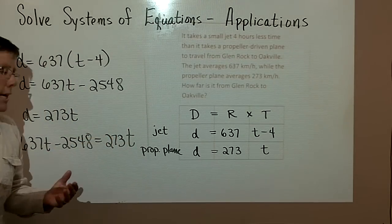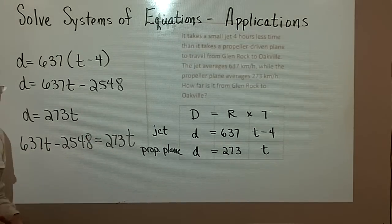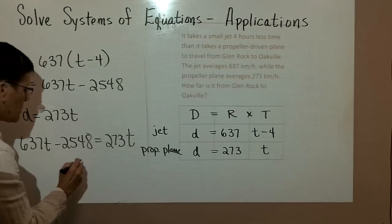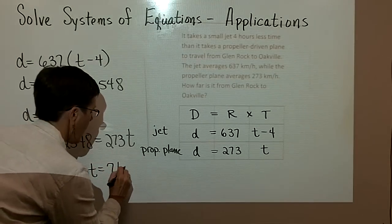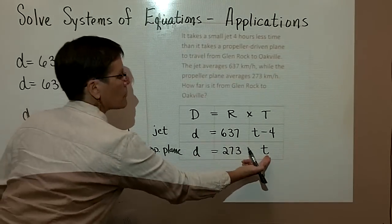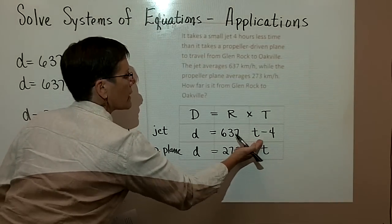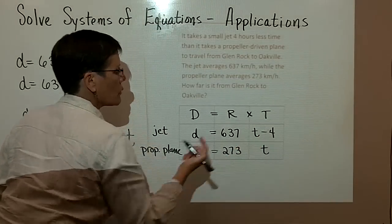I'm just going to go ahead and tell you that when you subtract 637T from both sides and then divide by whatever that coefficient is, you're going to find out that time is seven hours. Now please remember that's for this plane. It takes seven hours. Therefore this plane takes three hours because seven minus four is three.